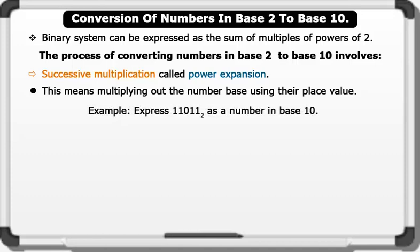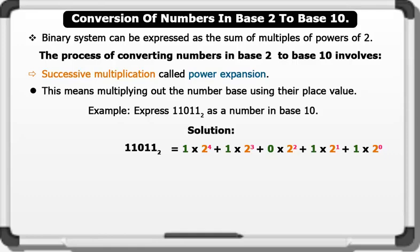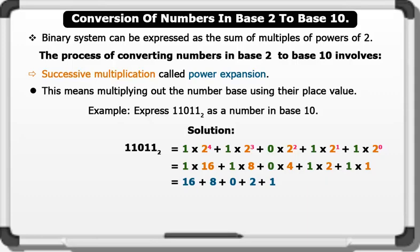Let's see an example. Express 11011 in Base 2 as a number in Base 10. Let's multiply the powers of 2. Equals 1 times 2 raised to the power 4, plus 1 times 2 raised to the power 3, plus 0 times 2 raised to the power 2, plus 1 times 2 raised to the power 1, plus 1 times 2 raised to the power 0. This gives us 1 times 16, plus 1 times 8, plus 0 times 4, plus 1 times 2, plus 1 times 1. Now let's add: 16 plus 8 plus 0 plus 2 plus 1, this gives us 27.